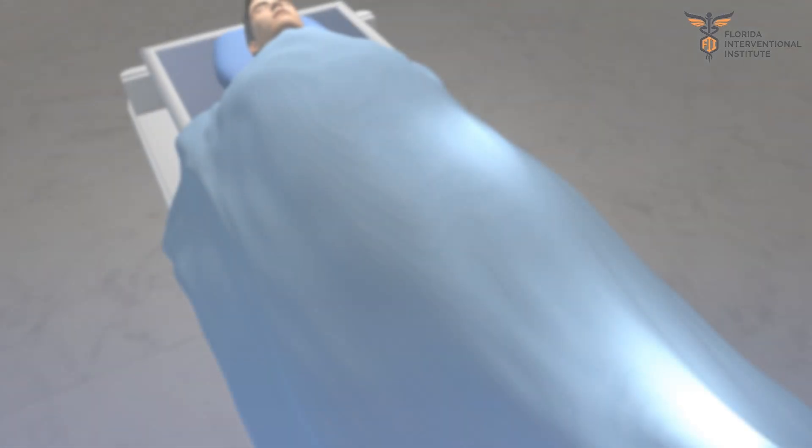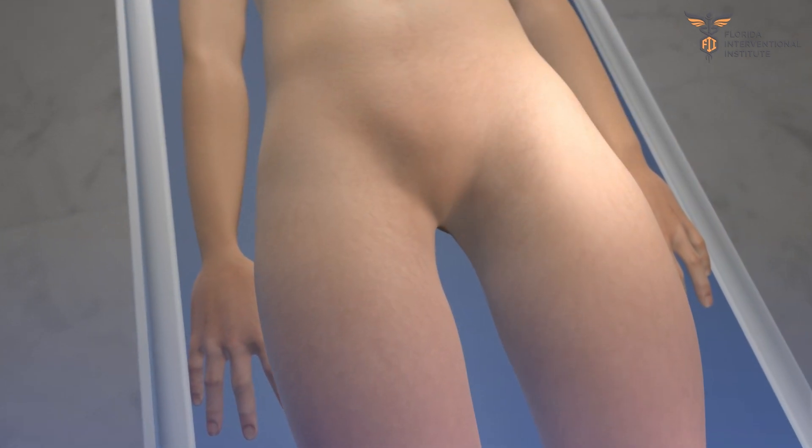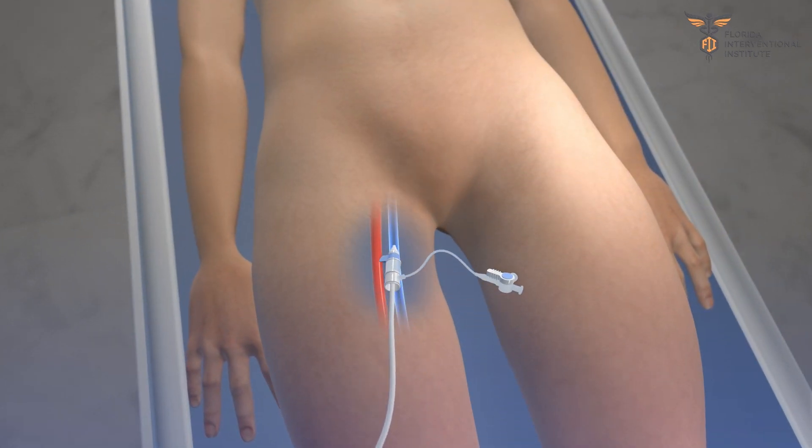During a varicocele embolization procedure, a catheter, or tiny plastic tube, is introduced into the vein in your neck or groin through a tiny skin puncture.